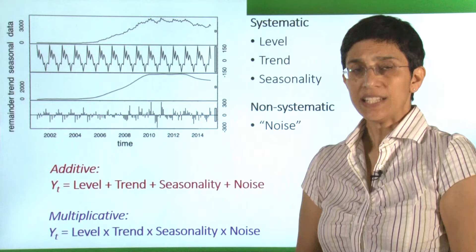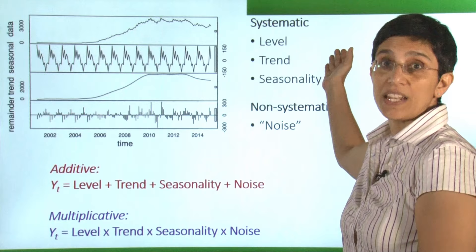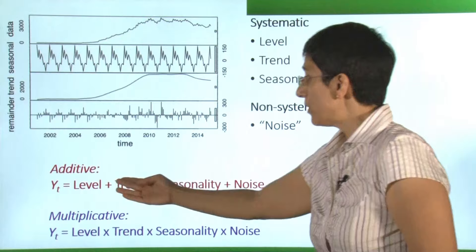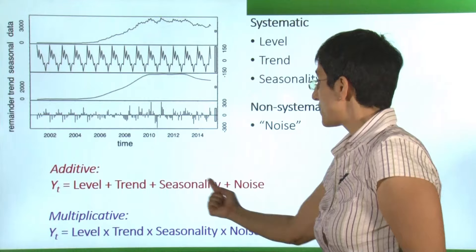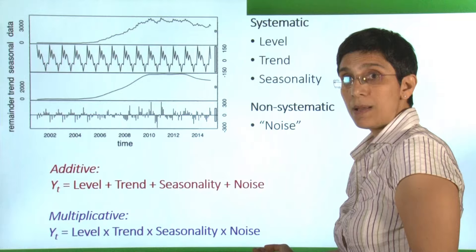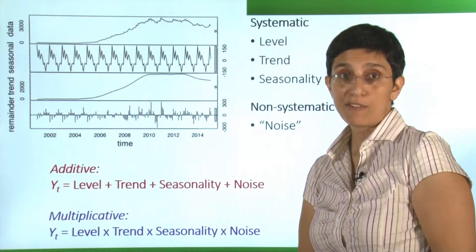Let's think about our series as comprising two parts: a systematic part that includes level, trend, and seasonality, and a non-systematic part that is simply the noise. In additive models, we break the series down into different components by adding them with summation signs. In contrast, in multiplicative models, we decompose the series into components and combine them using multiplication signs. This is the main difference between the two types of models.